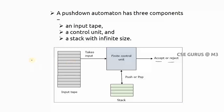For example, with input a^n b^n where n = 3, the input is 'aaabbb'. Input is taken one by one with respect to both the current state and the top of the stack. The stack allows you to insert elements one by one — the last element inserted is taken out first. Inserting is called a push operation and removing is called a pop operation; this is the last-in-first-out (LIFO) concept.